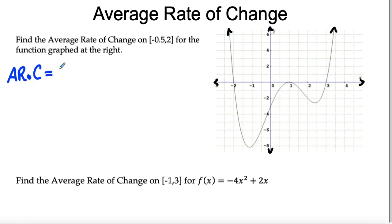If we think about average rate of change, you can just think of it as the slope formula: y2 minus y1 over x2 minus x1.